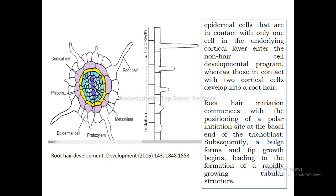Root hair initiation occurs with the positioning of a polar initiation site. In the trichoblast, the bulging or outgrowth initiates at the basal end of the cell in a polar manner — there is no initiation at the bottom or apical side, but a bulge forms at the basal end. This outgrowth from the trichoblast leads to the formation of a root hair. This is the polar formation of the root hair.